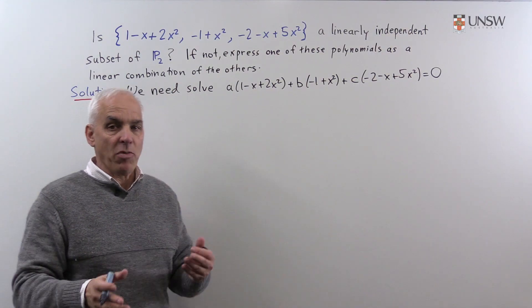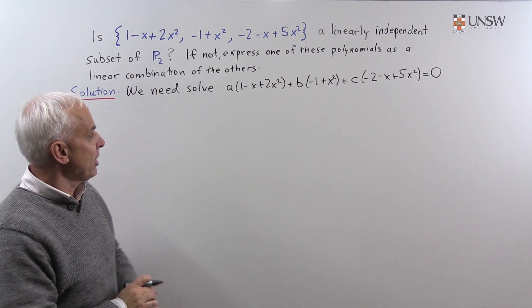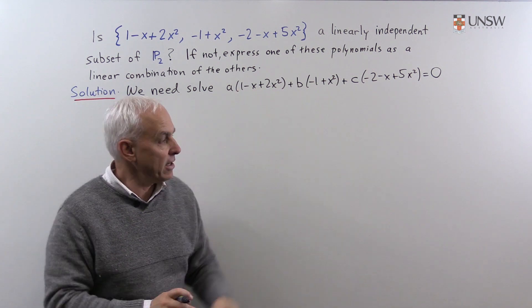0 in this context is the 0 polynomial, 0 plus 0x plus 0x² and so on. So we need to solve this for a, b, and c.